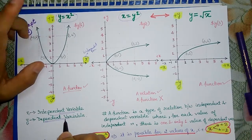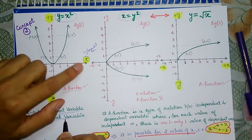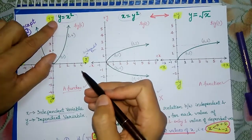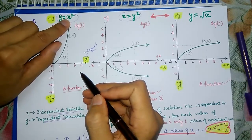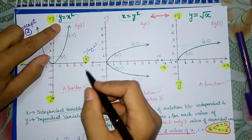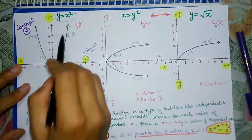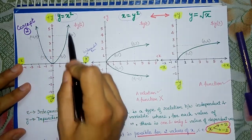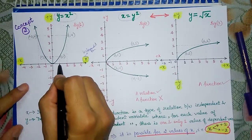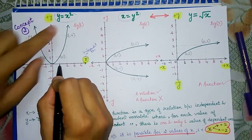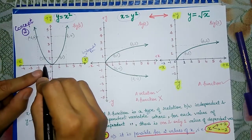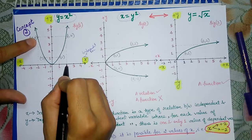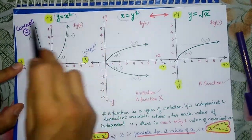x is called the independent variable, and y is called the dependent variable, because the value of y depends on the value of x. If x is equal to 1, y comes out to be 1; if x is equal to 2, y comes out to be 4. When you plot the graph of y is equal to x squared, for x equal to 1 and minus 1, y gives 1; for x equal to plus or minus 2, y gives 4.